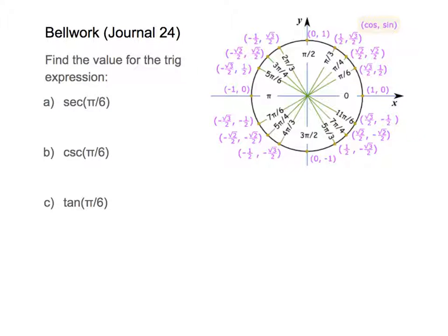Here we're going to figure out what's the value for the given trig functions. I'm asked for secant, and secant is the reciprocal of cosine — reciprocal just means to flip. So if I have pi over 6, I'm going to look for pi over 6 and cosine. Since secant is related to cosine, I have to flip this cosine value.